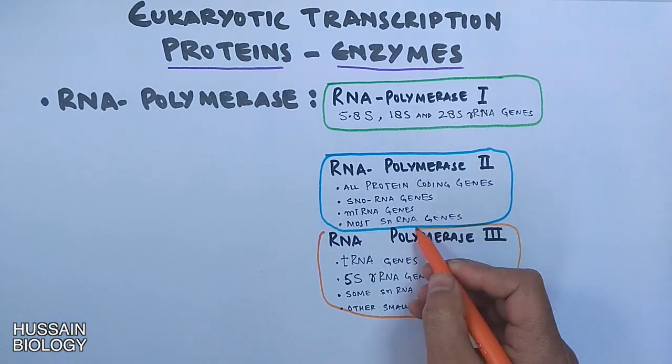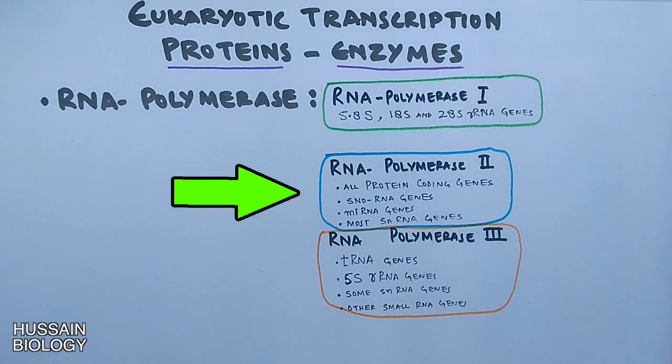Among these 3 RNA polymerases, it is RNA polymerase 2 which transcribes all protein coding genes. So this enzyme can be said the primary enzyme or primary RNA polymerase in eukaryotes. These are the diversity of genes being transcribed by all the 3 RNA polymerases.